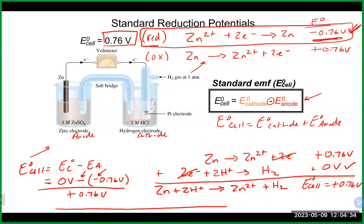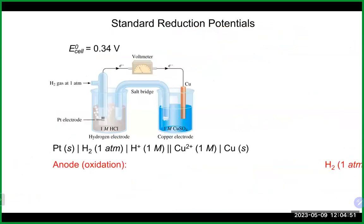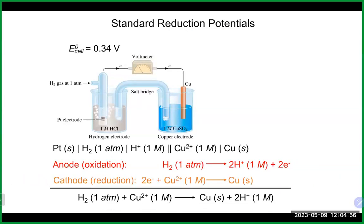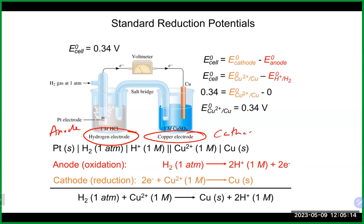Hooking up the standard hydrogen electrode with copper — where copper is the cathode — gives a cell voltage of 0.34 V, so the SRP value for copper is +0.34 V. This also demonstrates that anything can be the anode or cathode. If you get a negative voltage, just switch them — make your anode the cathode and vice versa — and you'll get a positive voltage, making the reaction spontaneous, similar to flipping a battery around.